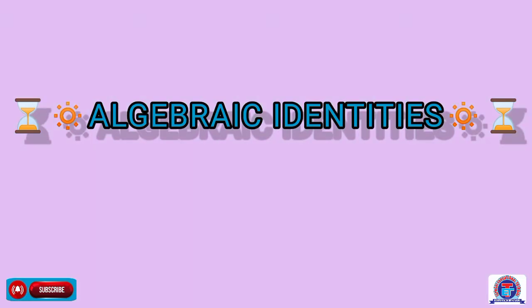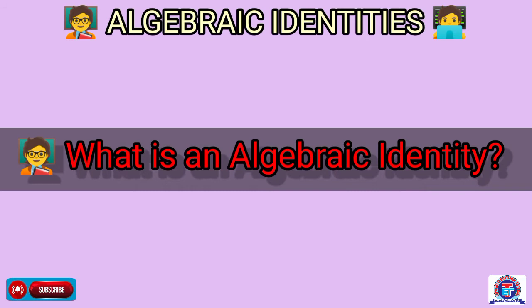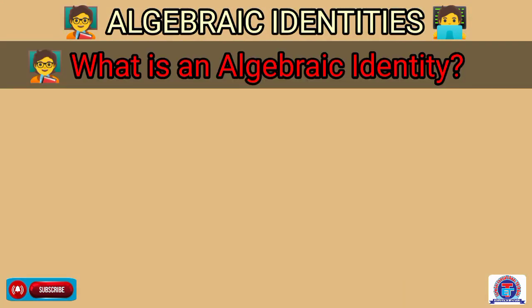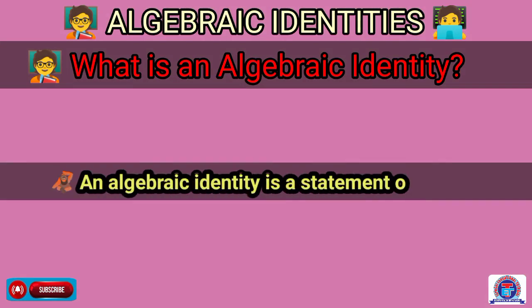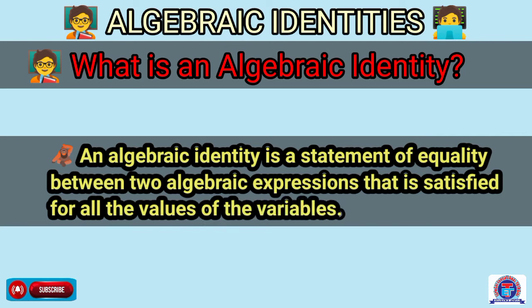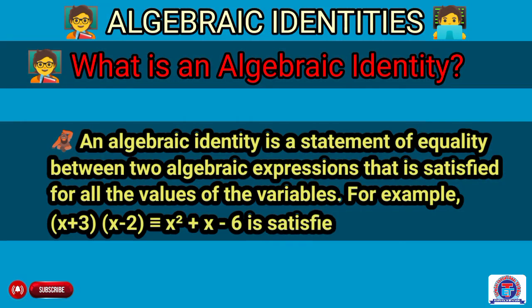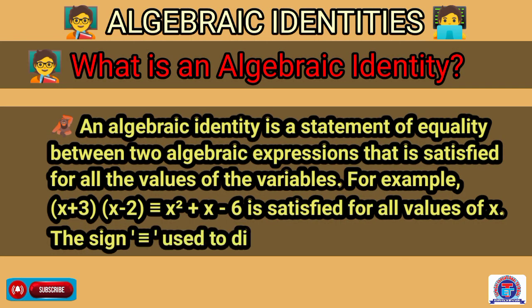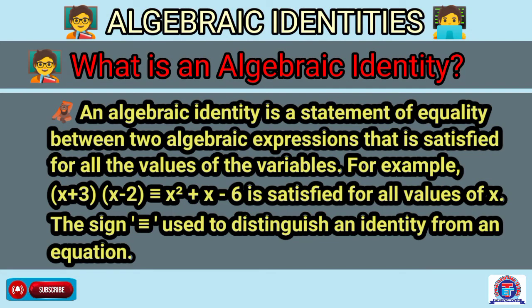In this video class we will discuss what is an algebraic identity. An algebraic identity is a statement of equality between two algebraic expressions that is satisfied for all the values of the variable. For example, x plus 3 into x minus 2 is identical to x square plus x minus 6. This is satisfied for all values of x. The sign identical to or equivalent is used to distinguish an identity from an equation.